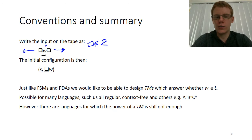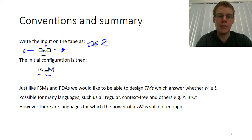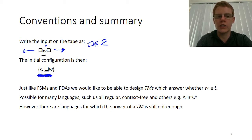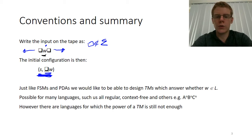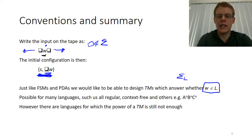We then have the initial configuration of our Turing machine. The initial configuration is the start state paired with whatever is on the tape and the position of the tape head. The initial configuration for a Turing machine deciding whether a string is in a language will have the machine in the start state, with the tape head one space to the left of the input string on the tape.